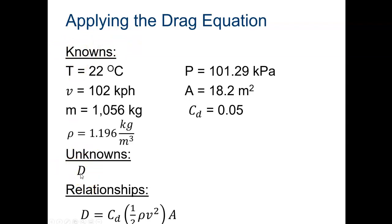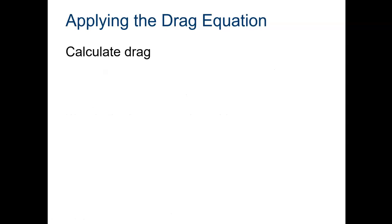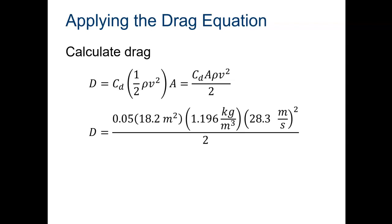So to calculate drag, we look at the drag equation and simply plug in our values. We know our CD is 0.05, we know our area is 18.2 square meters, our density, our velocity, and so on, and we divide that by two. We get 436 newtons. If you remember, the weight was like 10,000 newtons, so drag is a lot different than weight, at least it should be in normal flight conditions.